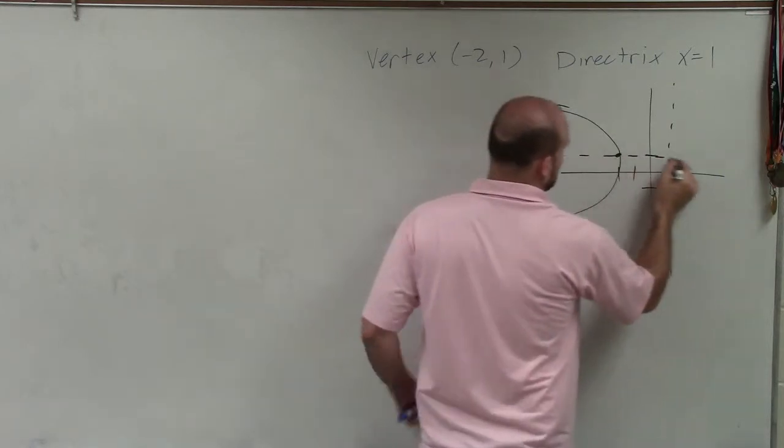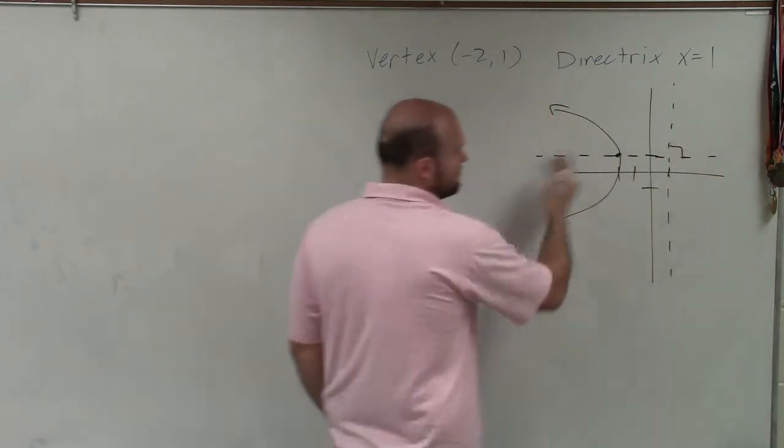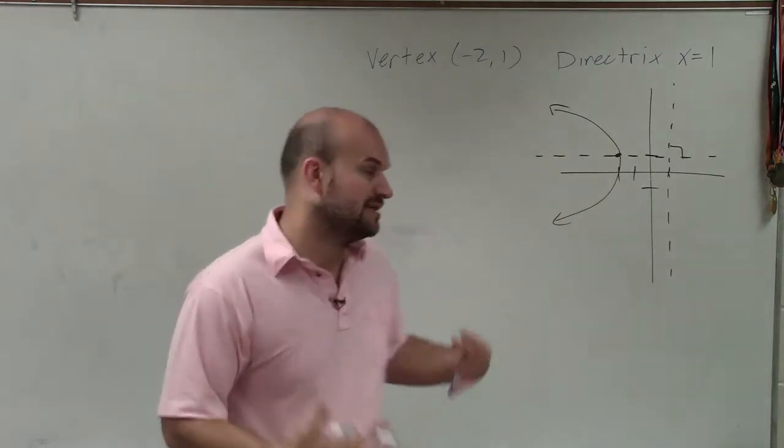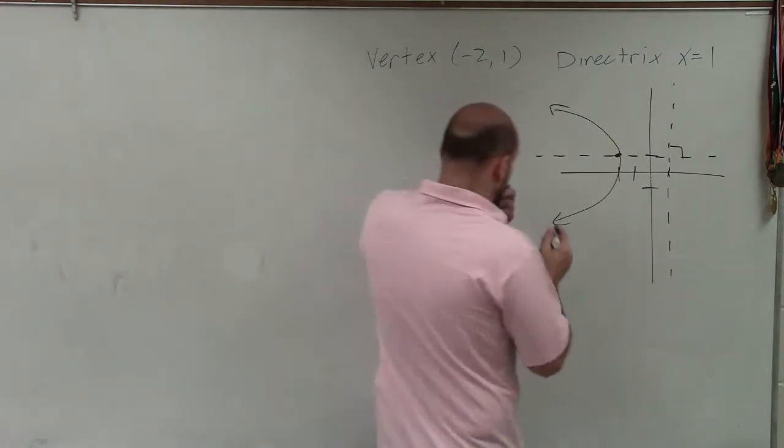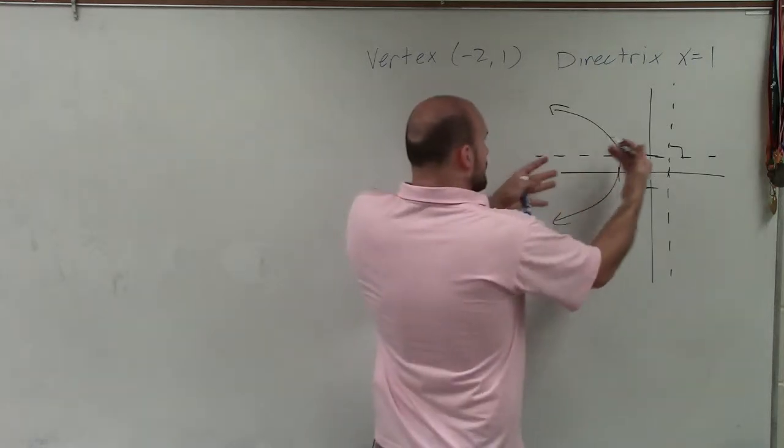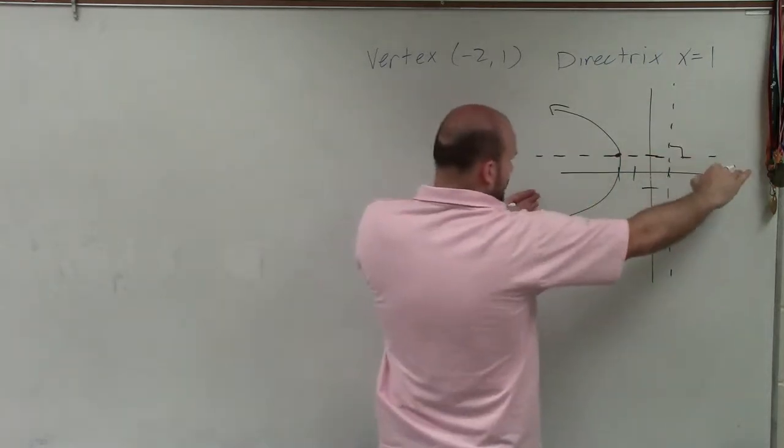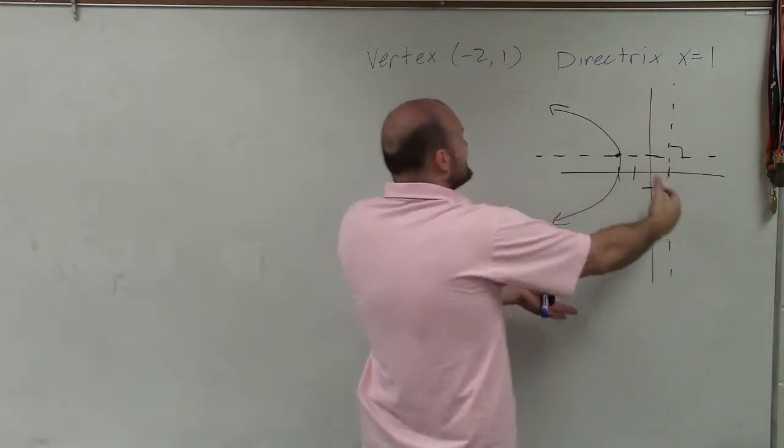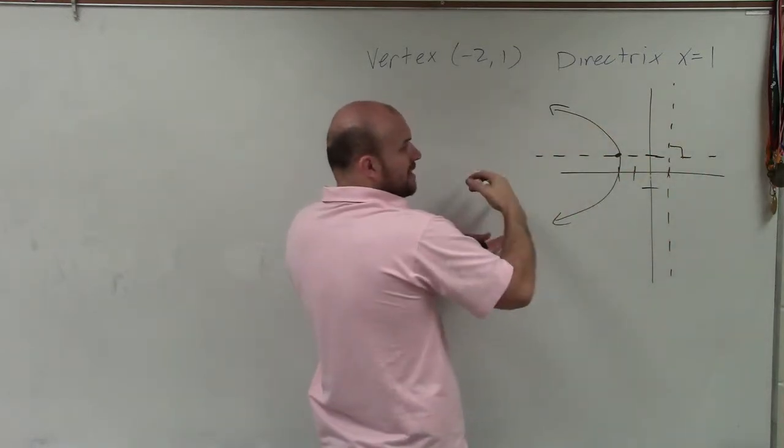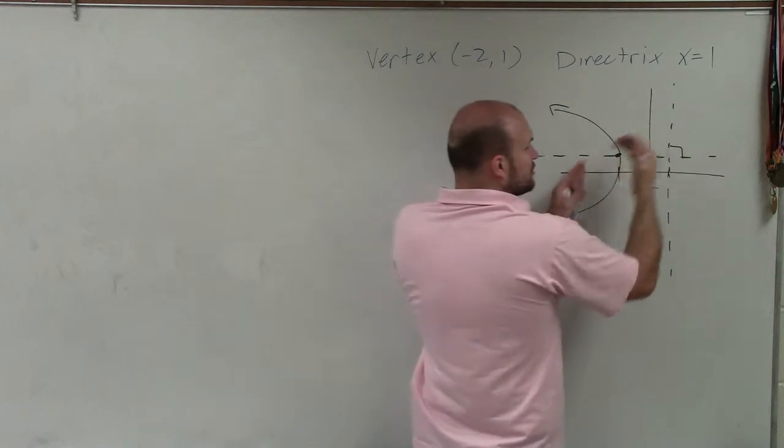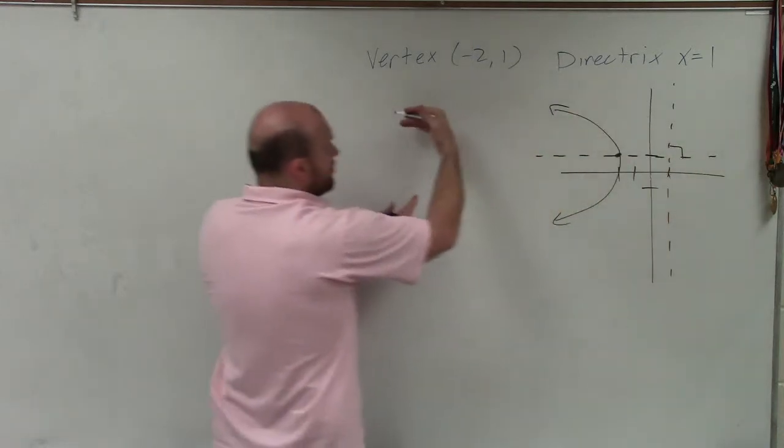And remember also that the directrix is perpendicular to my axis of symmetry. So that's very important for me to be able to see that now I know that my parabola, since my directrix is vertical, that means my axis of symmetry has to be horizontal. That means my parabola has to either open up left or to the right. But since the directrix is to the right of my vertex, it has to open up to the left.